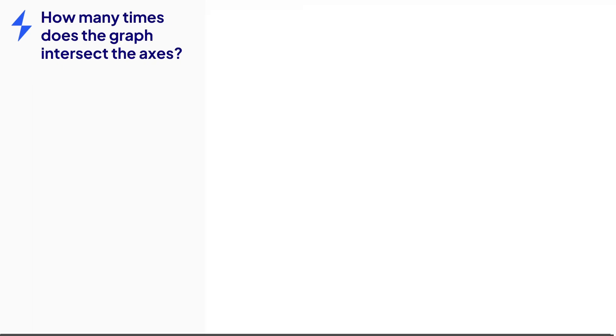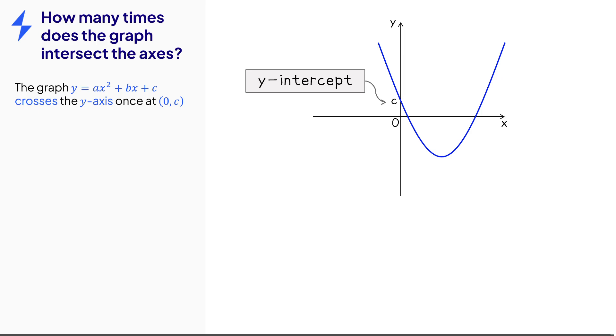Let's take a closer look at where quadratic graphs cross the coordinate axes. Each graph will cross the y-axis exactly once, and we call that the y-intercept. If the equation of the graph is written in general form, then it crosses the y-axis at 0, c. If it's written in any other form, you can find the coordinate just by substituting in x equals 0 to get the y-intercept.